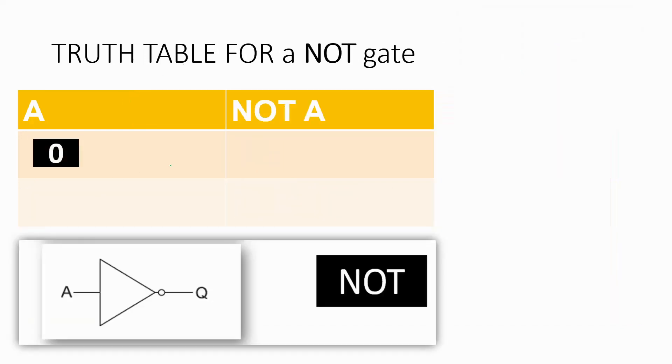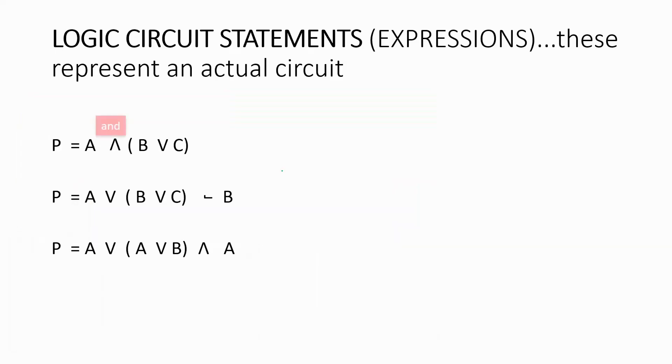A NOT gate is super simple. You only have two different possible inputs. You have one input at a time with either 0, which will always give you the opposite, which is a 1, or you have an input of a 1, which gives you a 0.